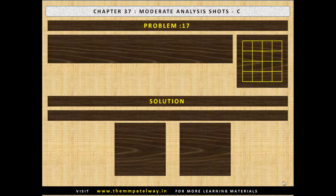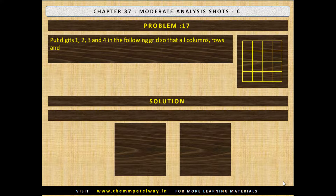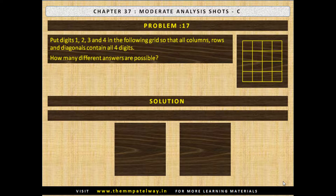Problem No. 17. Put digits 1, 2, 3 and 4 in the following grid so that all columns, rows and diagonals contain all 4 digits. How many different answers are possible? The solution is two basic answers are possible.